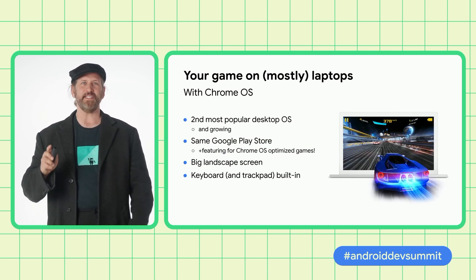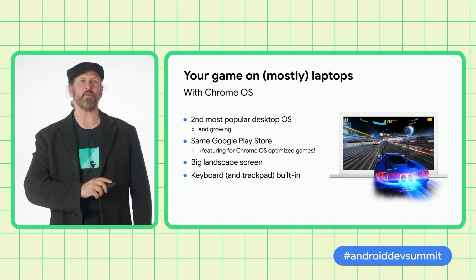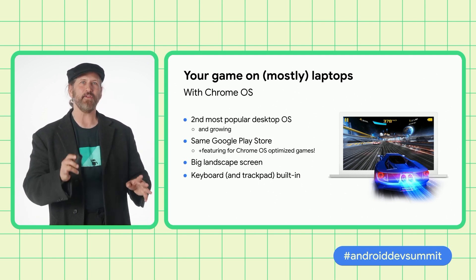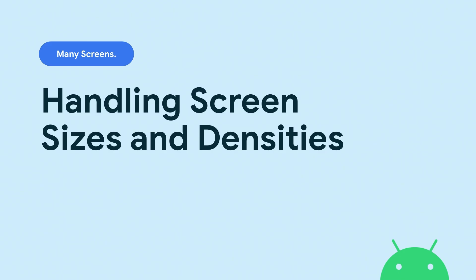Chrome OS is now the number two desktop operating system with a growing community of game players, and it runs Android games and has the Play Store. Chrome OS devices work best with titles that can support rendering in landscape. While many Chrome OS devices have touchscreens, and ones without touch will emulate many touch features using a mouse or trackpad, directly supporting mouse and keyboard input can improve the experience. You can capture the mouse or trackpad cursor for precise controls on API level 26 and above.